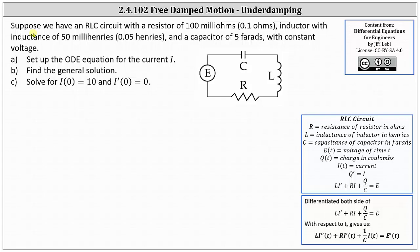Part B: find the general solution. Part C: solve for I(0) equals 10 and I'(0) equals zero.